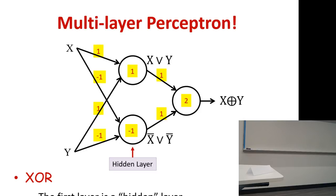The things in the middle are what I'm calling the hidden layer. Why are they hidden? Their outputs are not really going to be seen — what you're only seeing is the final output. If you don't really care what the hidden values are and you're only interested in the final output, that's the hidden layer. And using a network of this kind, you can form an XOR.